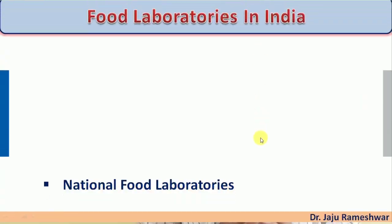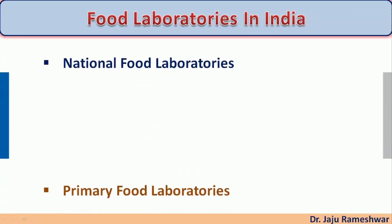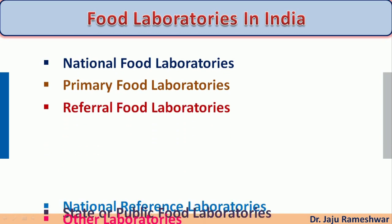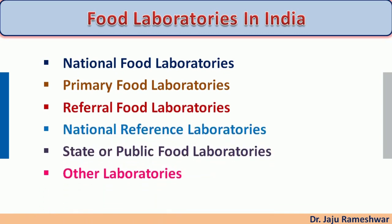What are the different types of food laboratories in India? There are five types: first, the National Food Laboratory; second, the Primary Food Laboratory; third, the Referral Food Laboratory; fourth, the National Reference Laboratory; and fifth, the State or Public Food Laboratory.